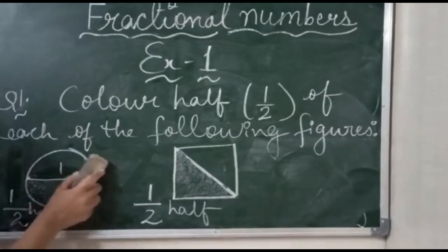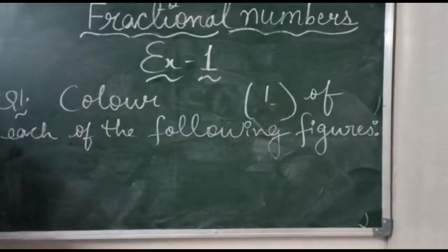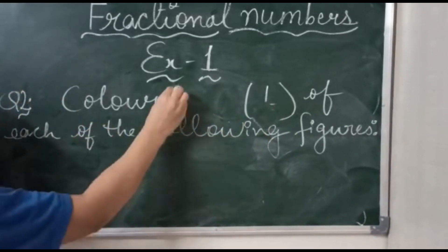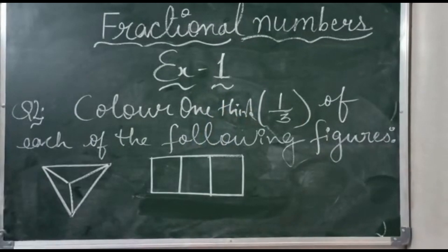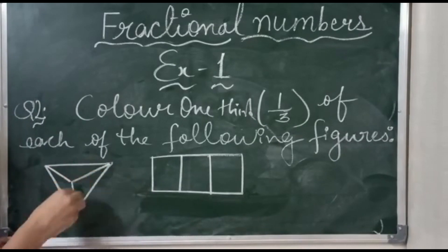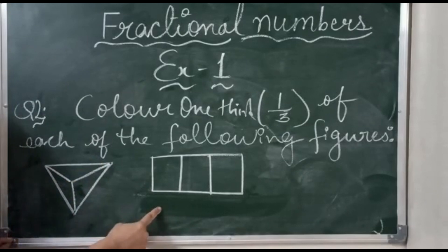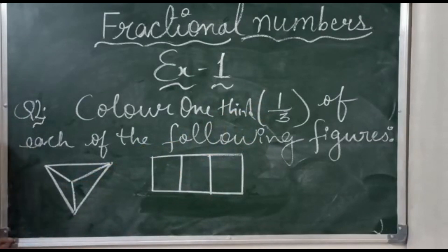The next question is: Color one third of each of the following figures. You can see on the board there are two figures — one is a triangle and the second is a rectangle. The triangle is divided into three equal parts, and the rectangle is also divided into three equal parts: one, two, and three. The question says color one third, meaning one portion we have to fill only.